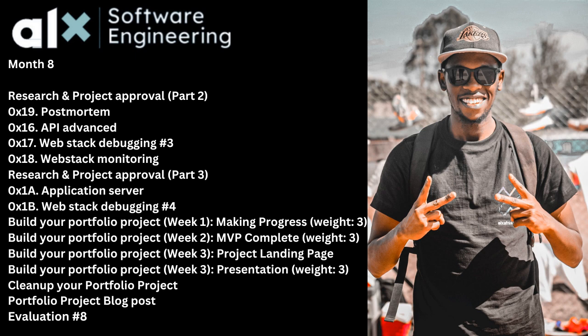You also have the post-mortem, which is another DevOps project where you're given different situations and asked to provide a solution on how you'd approach them. Then there's API Advanced, which teaches you more about working with APIs. After that, web stack debugging three and four close out the DevOps projects — they're designed to help you practice DevOps and Docker containers. Web stack debugging ran from zero all the way through four.